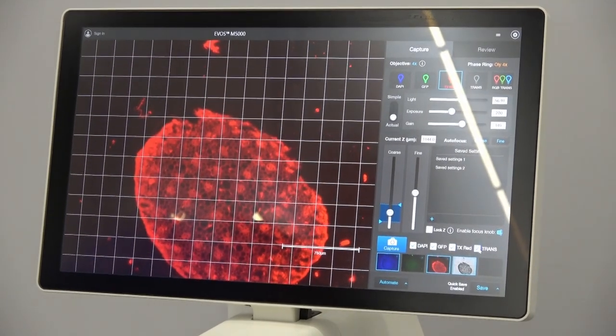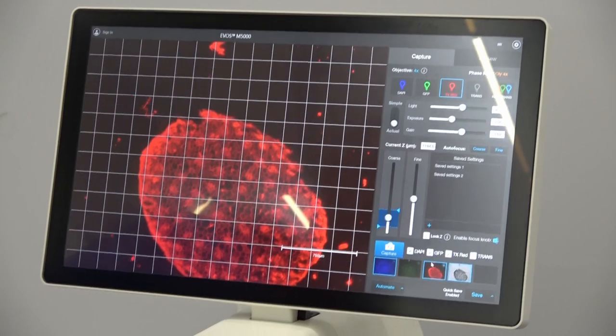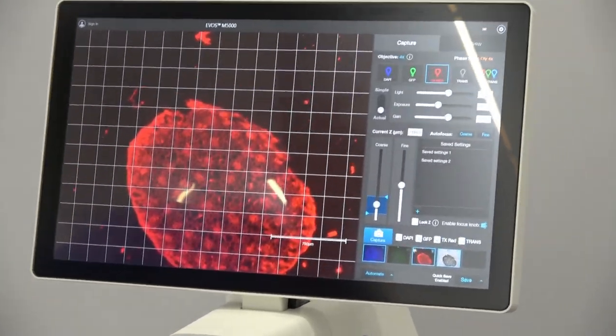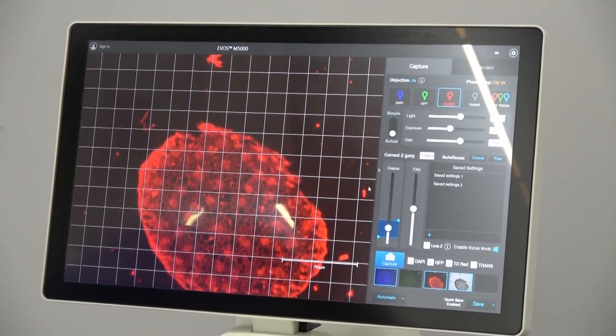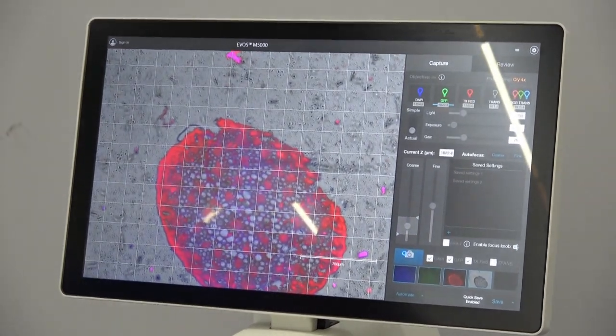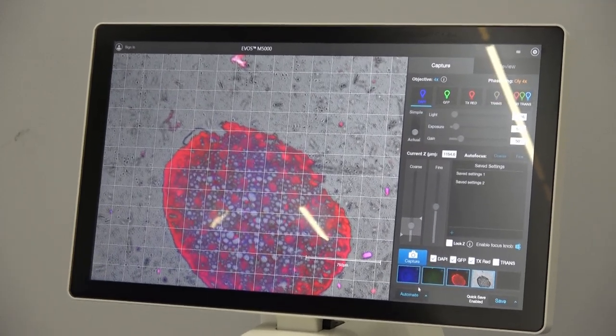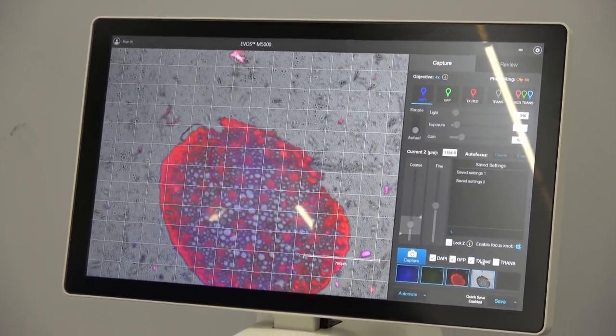You can turn off which colors you're going to capture by just using your check boxes here. Again, tell it to capture.